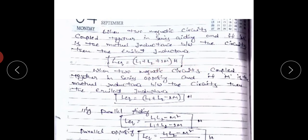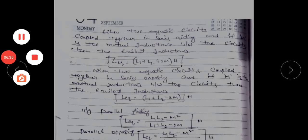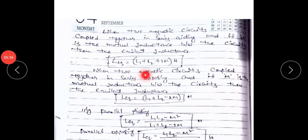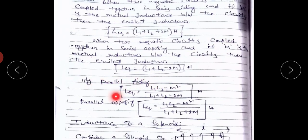For the series opposing connection, L_eq equals L1 plus L2 minus 2M Henrys. For the parallel aiding connection, L_eq equals (L1·L2 minus M²) divided by (L1 plus L2 minus 2M). For the parallel opposing connection, L_eq equals (L1·L2 minus M²) divided by (L1 plus L2 plus 2M).